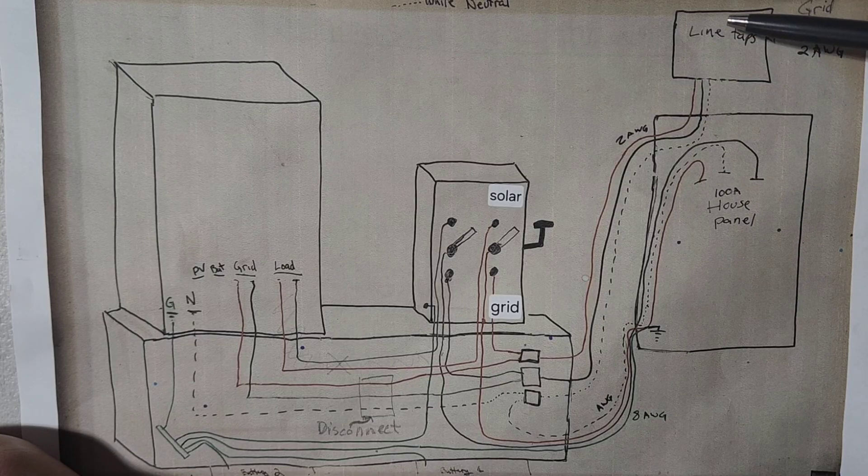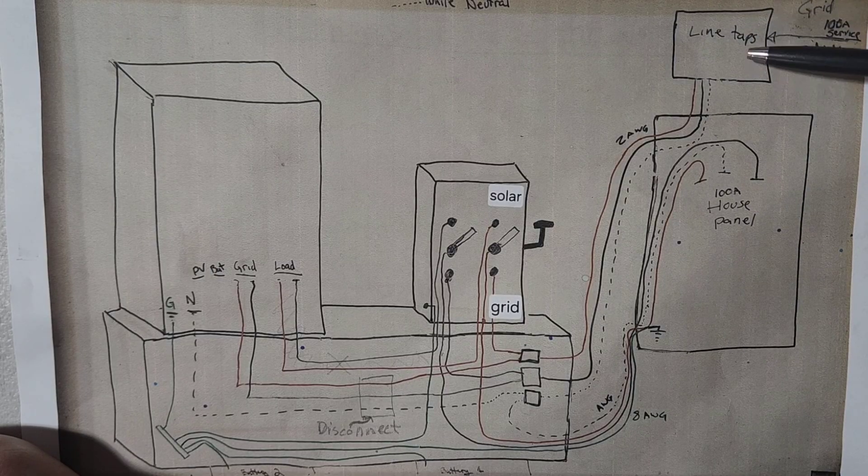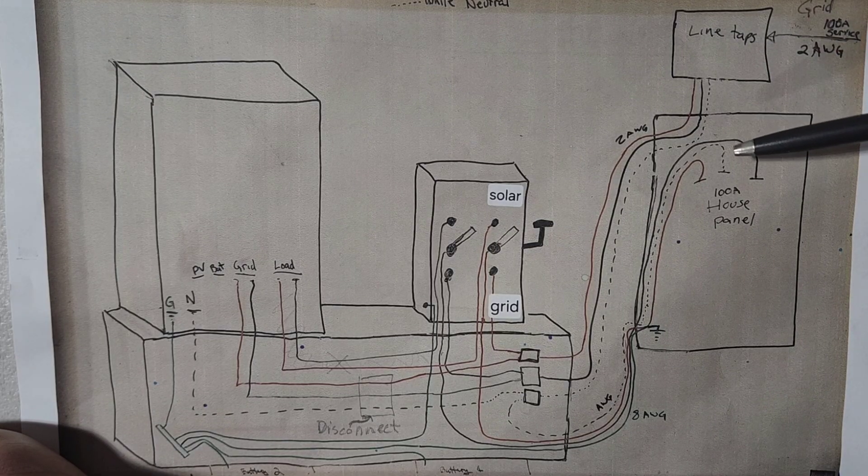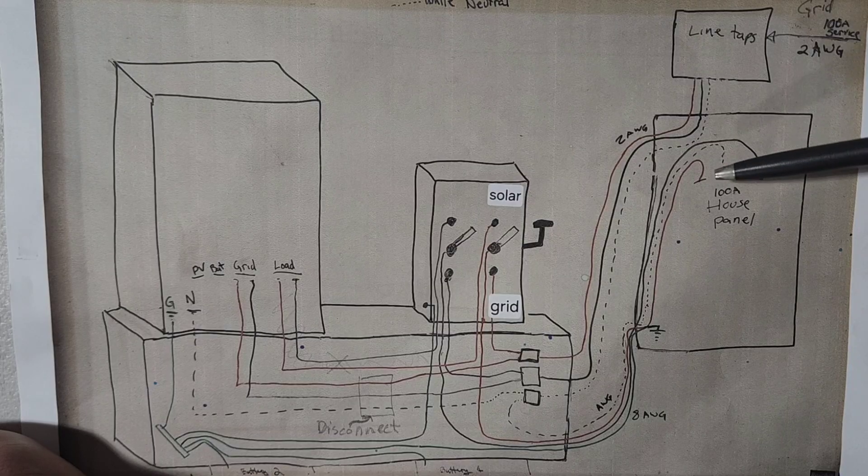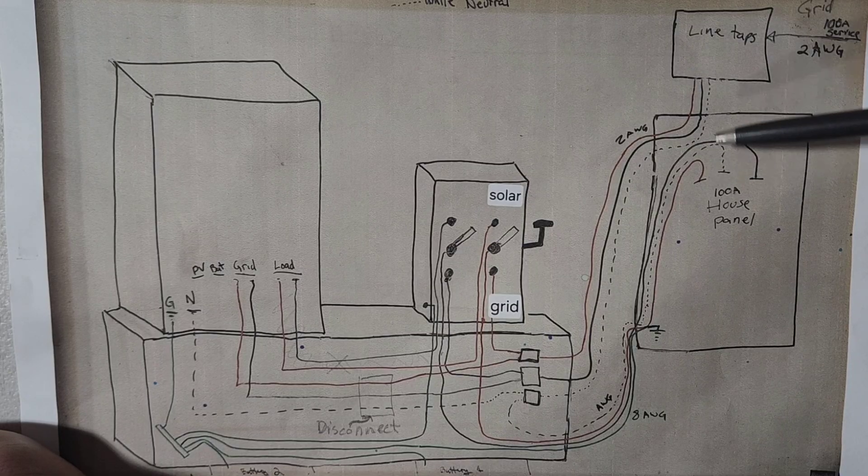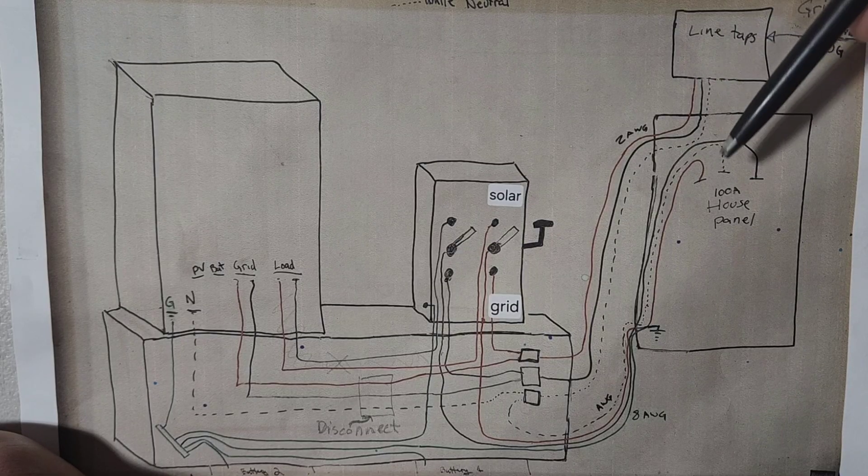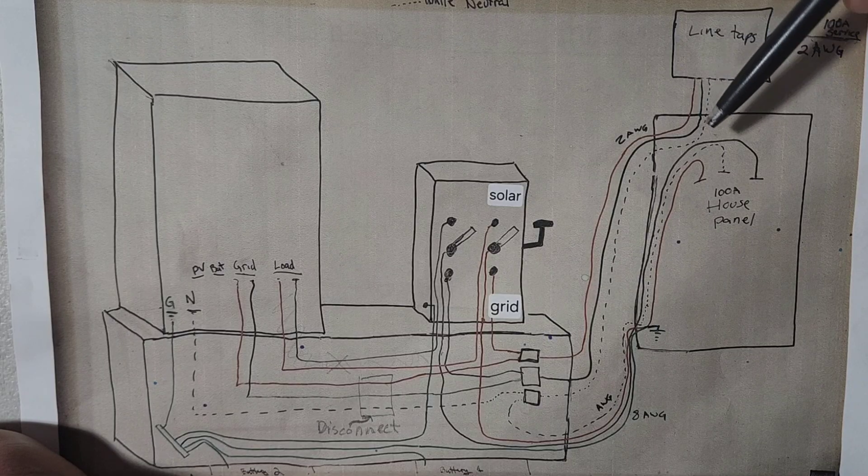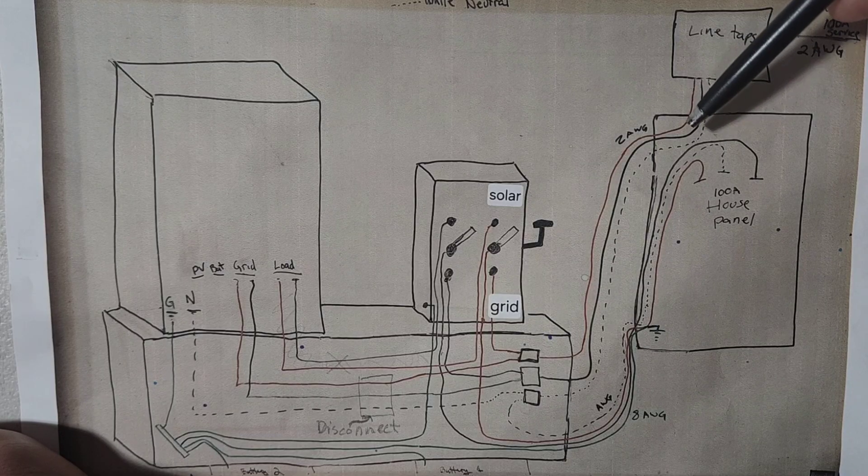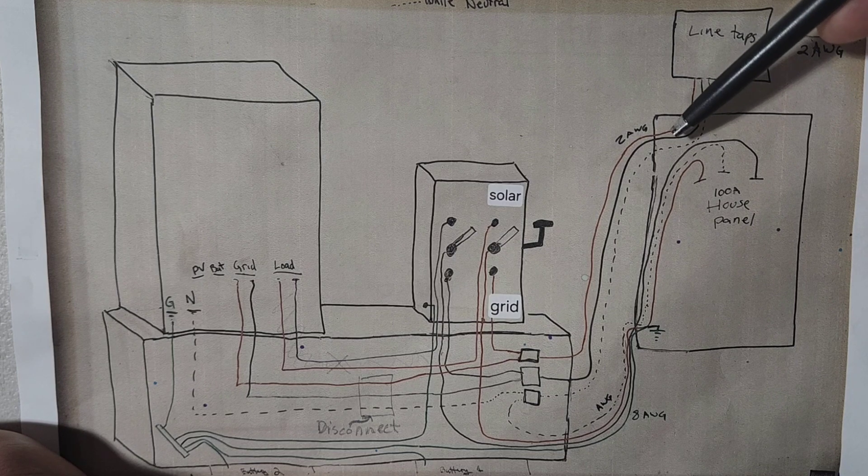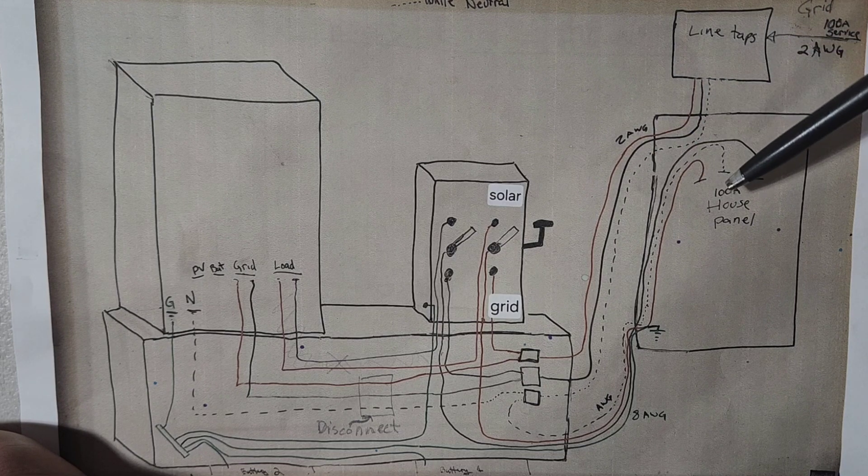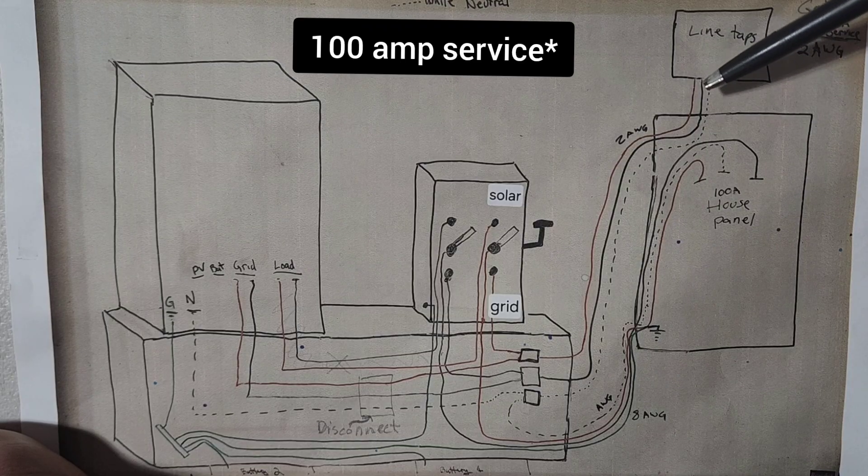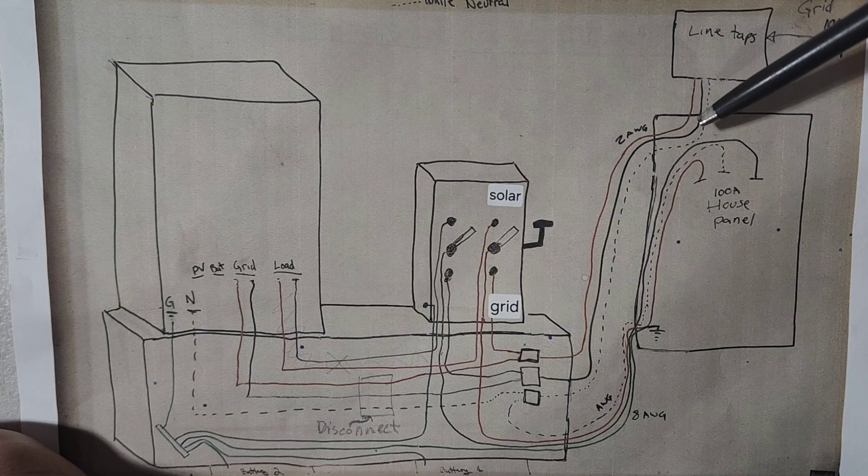There's actually a shutoff switch above here on the outside of my house. So basically what I did in my setup, and your house is maybe a little bit different than this, but I disconnected my lugs that were feeding in here and then I added what's called a Polaris connector. It allowed me to extend these wires, and these are two gauge wires for my house because I have a hundred amp house electrical panel.